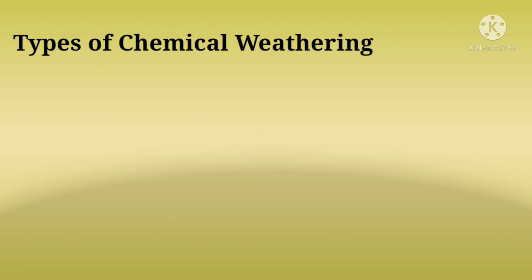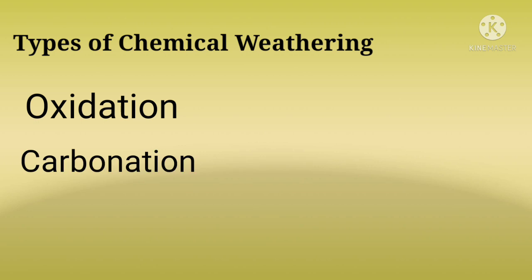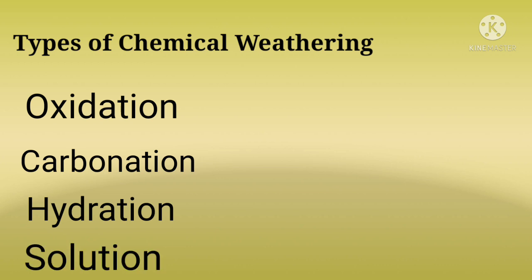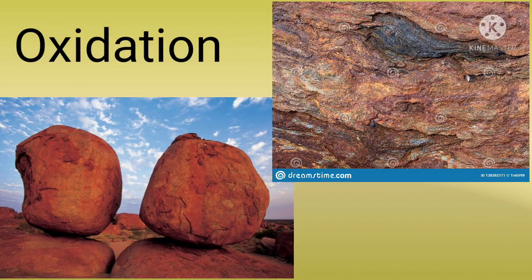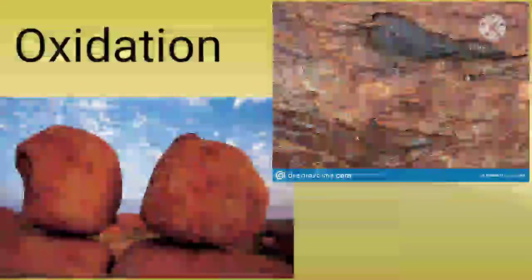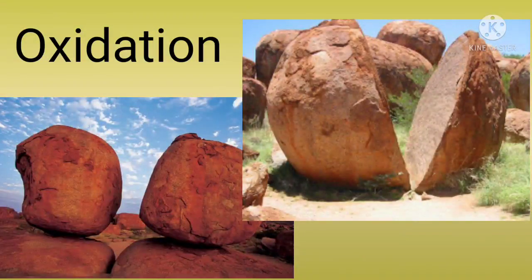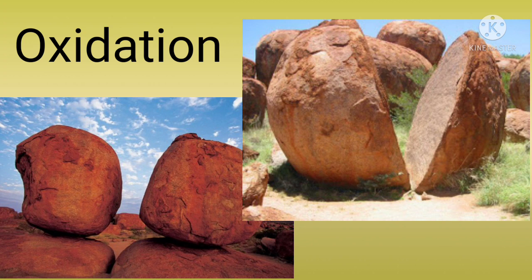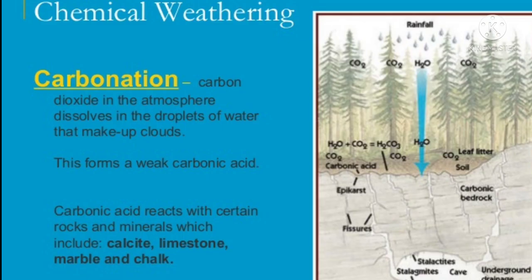The different types of chemical weathering are: oxidation, carbonation, hydration, and solution. In the process of oxidation, minerals in the rock react chemically with oxygen — for example, rusting of iron, where iron combines with oxygen to form a reddish-brown layer of ferric oxide on the rock surface. Any rock that contains iron, when it reacts with oxygen, converts to a reddish-brown color.